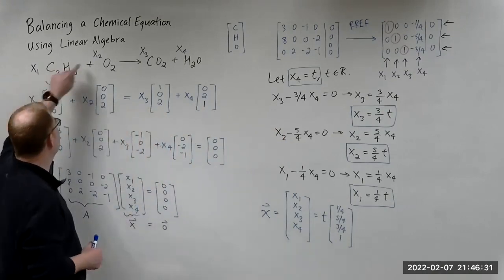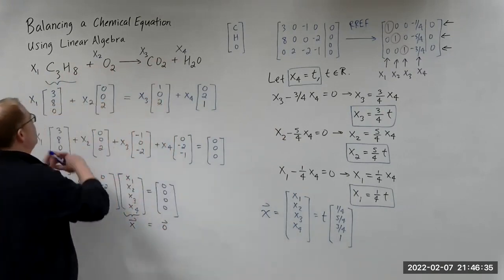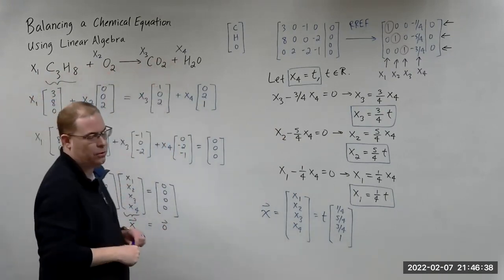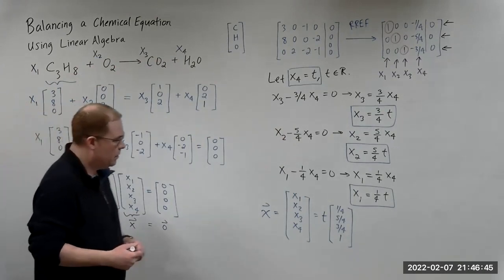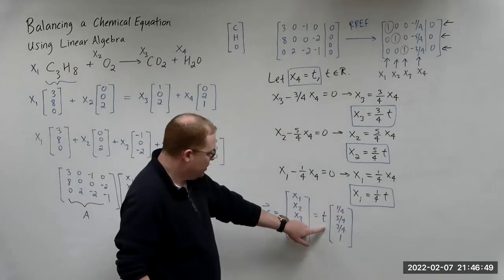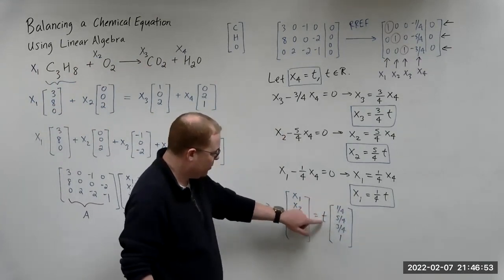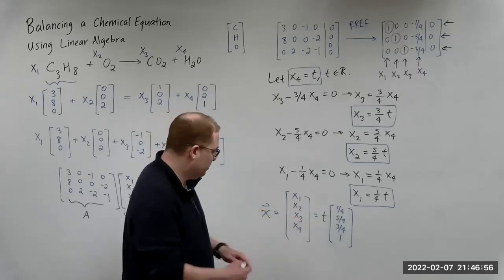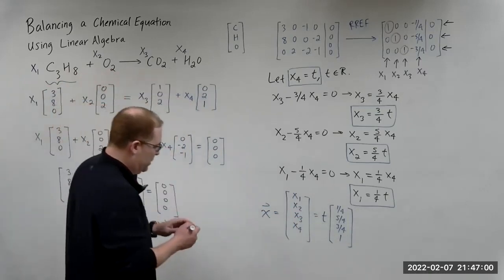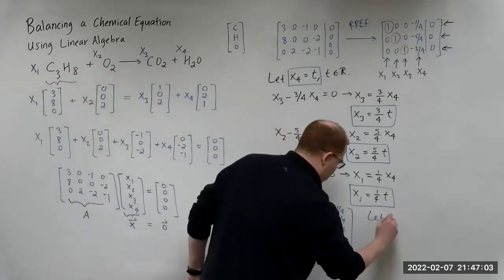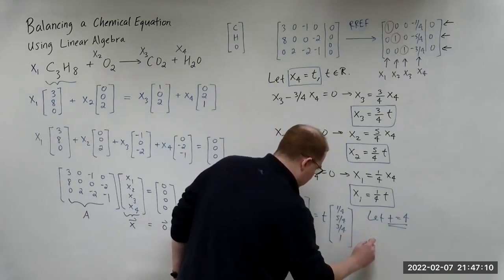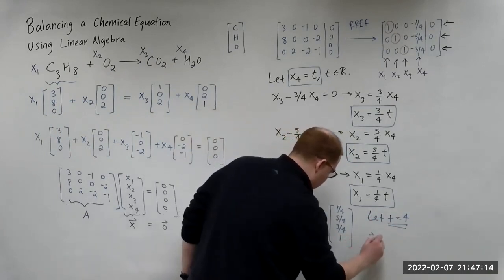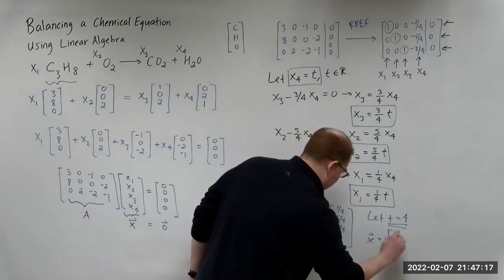Remember that to balance the equation we want the minimum positive integer values. We're dividing everything by four, so if we let t equal four we're going to get the minimum count to balance this. Setting t = 4, we get the specific solution: X1 = 1, X2 = 5, X3 = 3, and X4 = 4.